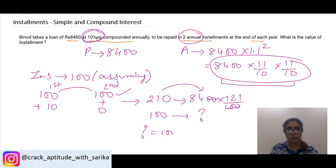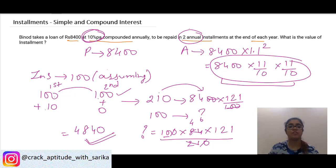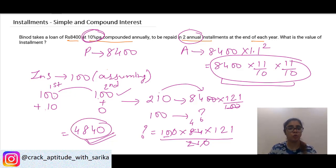Calculating: 100 × 84 × 121 / 210. The zeros cancel and 210 divides to give 121 × 4 × 10 = 4840. So the installment Binod has to pay at the end of every year is 4840 rupees to discharge a debt of 8400 after two years.